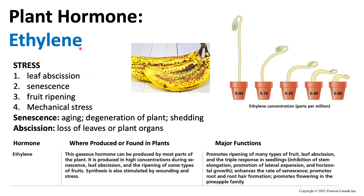Ethylene is produced during any of these four stresses: leaf abscission, senescence, fruit ripening, and mechanical stress — which can range from climate stress to injury. Senescence is defined as the aging and degeneration of a plant or shedding, and abscission is the loss of leaves or plant organs, seen during fall. One more effect of ethylene is that as its concentration increases in a plant, we see a thicker stem form, stem elongation is reduced, and we see a characteristic curvature.